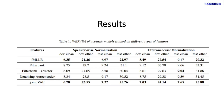From the second and third rows, we can see that filterbank features with and without i-vectors performed significantly worse than FMLLR ASR. From the fourth row, we see that the denoising autoencoder provides a slight improvement over filterbank ASR, but is still worse than FMLLR ASR. From the last row, we can see that our proposed joint VAE-based mapping performs significantly better than other baselines, and the drop from the upper bound FMLLR ASR is comparatively small.